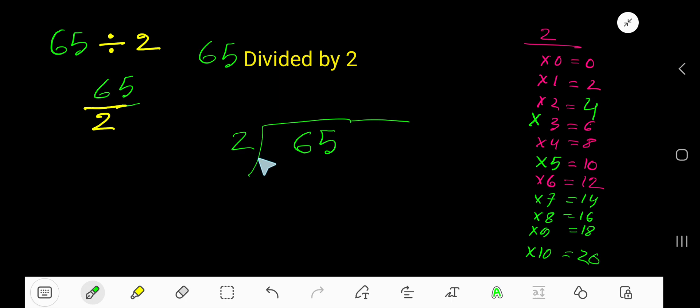2 goes into 6 how many times? We need multiplication table of 2. 2 times 0, 0. 2 times 1, 2. 2 times 2, 4. 2 times 3, 6.